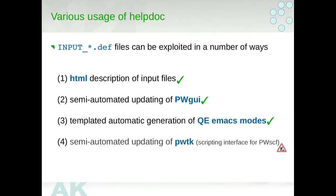So this kind of dev files have been exploited in a number of ways. Pietro also this morning has described that when you define it in a computer semantical way, the structure of the input file, then this can be automatically exploited for generating the corresponding code. I just described the automatic generation of HTML files. The other thing this is used for is semi-automated updating of PW GUI. And then last year, this is now also exploited for automatic generation of Quantum Espresso Emacs modes. And also this will be used for semi-automated updating of the PWTK.